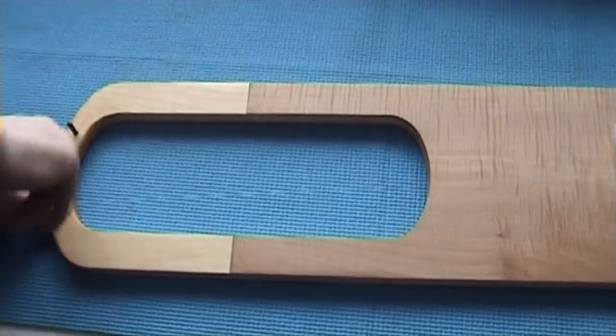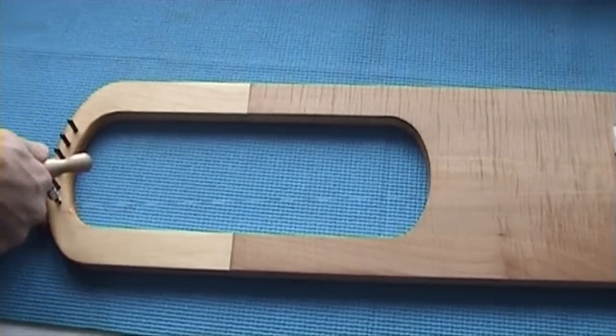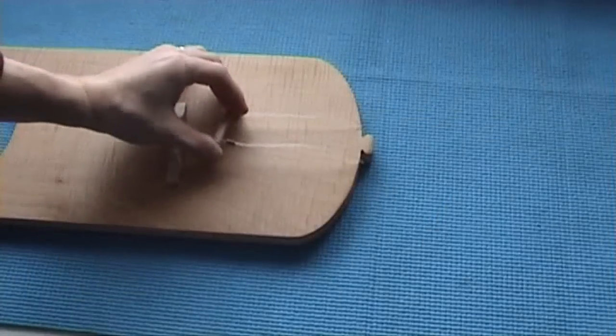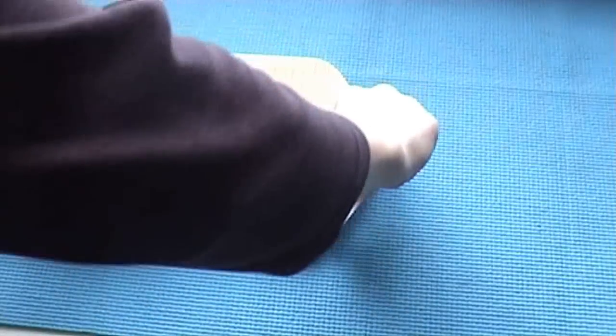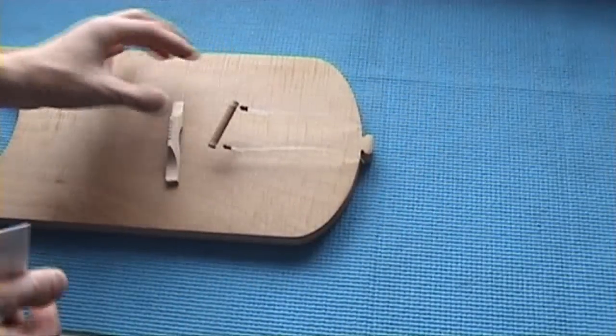Now we can put that under a little bit of tension. So we have one string on, and as you can see the tailpiece is not balanced yet because there's only one string holding it.